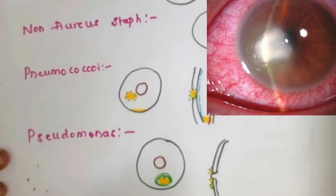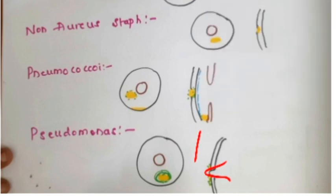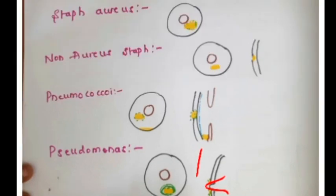Pseudomonas corneal ulcer - Pseudomonas is a gram-negative pathogen more common in contact lens users. There is dense stromal infiltration with marked suppuration and liquefactive necrosis, as shown. These ulcers tend to form a descemetocele followed by perforation of the cornea.